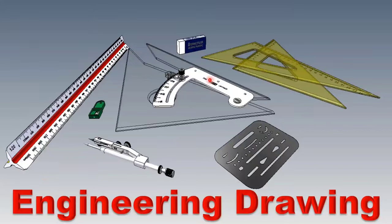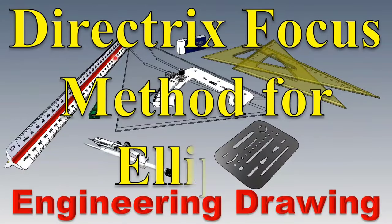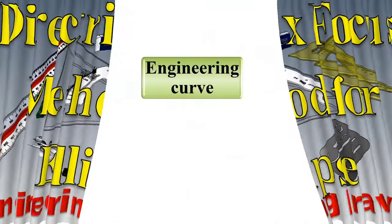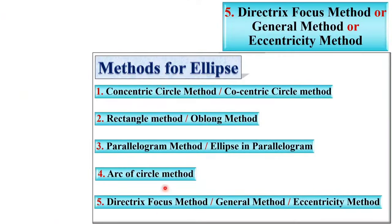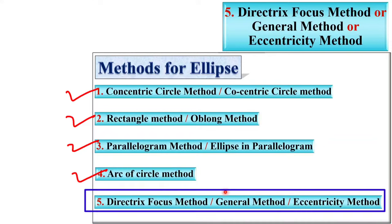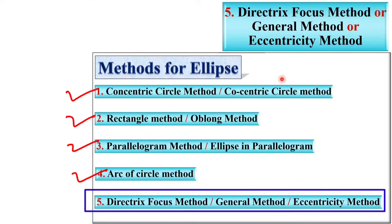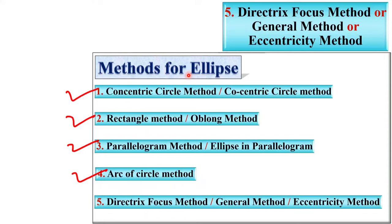Welcome to my engineering drawing playlist. Today, I am going to discuss the directrix-focus method for the ellipse. These are the different methods for the ellipse. In the last video, we discussed the concentric circle method, rectangle method, parallelogram method, and arc of circle method. Now, it is time for the directrix-focus method, which is also known as the general method as well as the eccentricity method. So, let us see this last method of the ellipse.